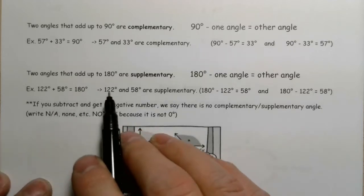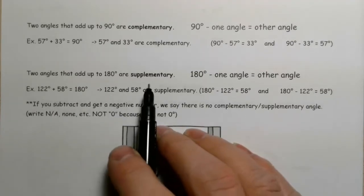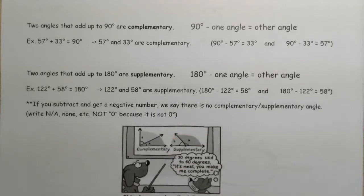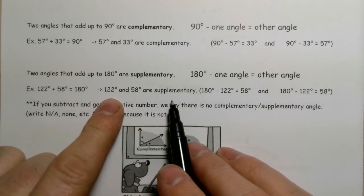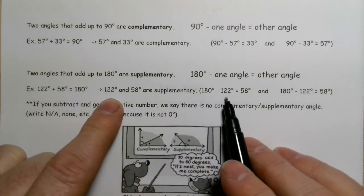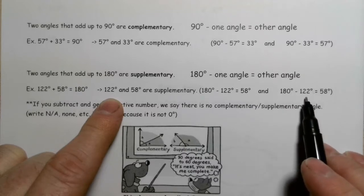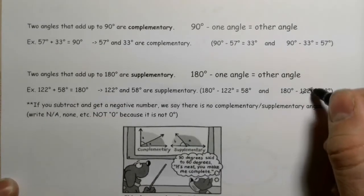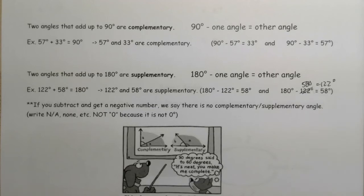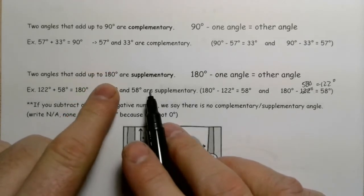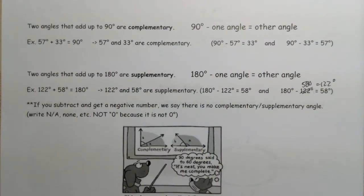On the other hand, when two angles add up to 180, they are supplementary. This is just a matter of vocabulary — it's just learning what the word means. So 122 plus 58 equals 180, therefore these two angles are supplementary. 180 minus 122 gives you 58, and 180 minus 58 equals 122. Complementary angles add up to 90 degrees — the two angles are complements of each other. Two angles that add up to 180 degrees are supplementary angles — those two angles are supplements of each other.